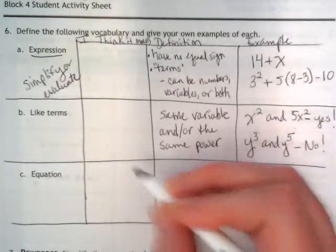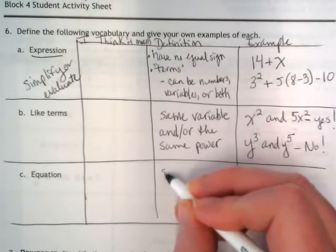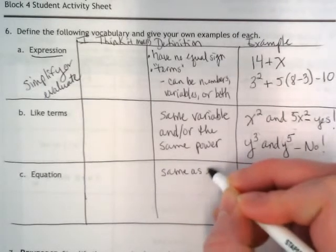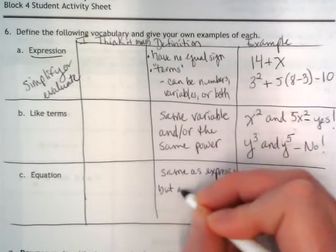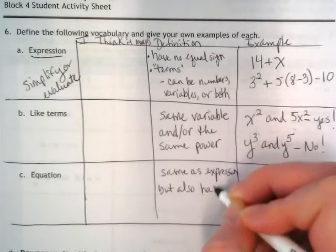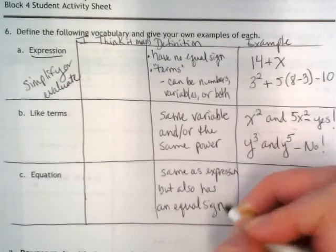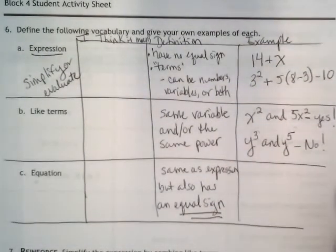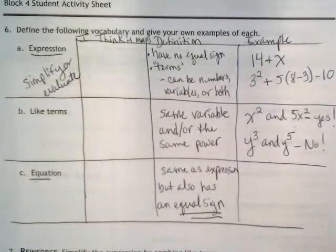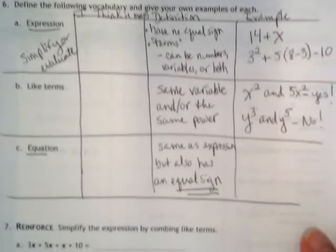And finally, an equation has everything that an expression has, except it also has what? And that equal sign. It also has an equal sign. In the word equation, it starts off the same as equal. Doesn't it? Do you see that root in there?